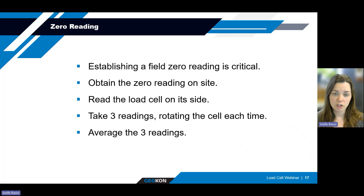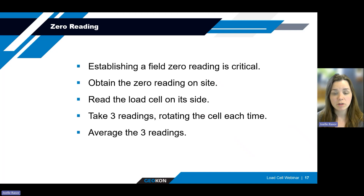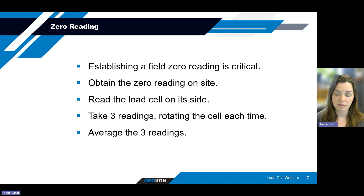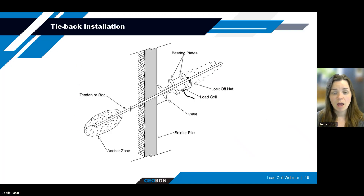Moving on to some installation best practices: to help improve the accuracy of the load cell readings, attaining a good field zero reading is important. Before the load cell is set into place on the anchor or loading platform, place it on its side near the installation and take three sets of readings. The load cell can be rotated each time on its side. For vibrating wire load cells, each of the three or six sensors should be read at each resting position of the load cell. The strain gauges are all automatically averaged in the readout, typically. For tieback and rock bolt installations, the effect of gravity will increase the potential for eccentric loading on the load cell, which is particularly noticeable in the lower range of the loading process.